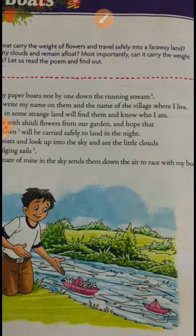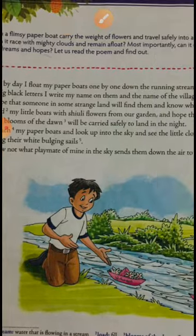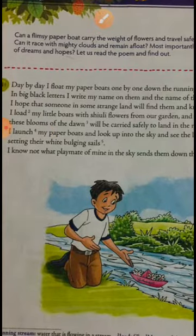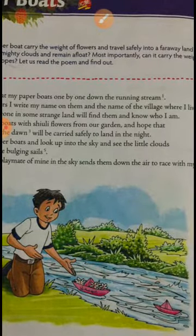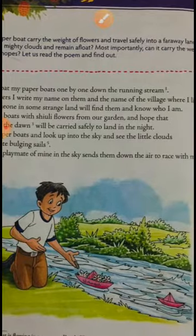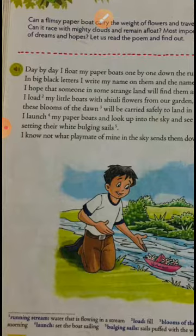Next, I load my little boats with shiuli flowers from our garden — he puts fresh flowers into his boat. He hopes that these blooms of the dawn — flowers that open early in the morning, very fresh flowers — will be carried safely to land in the night. So he thinks that wherever the boats are reaching, they will reach at night and the flowers will still be blooming.